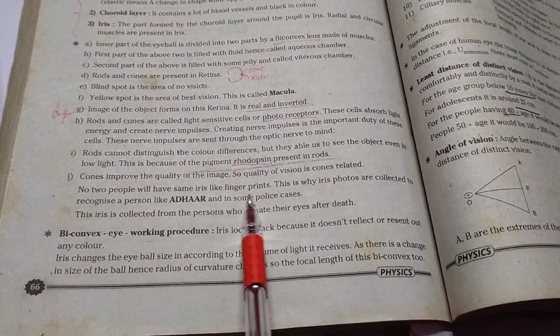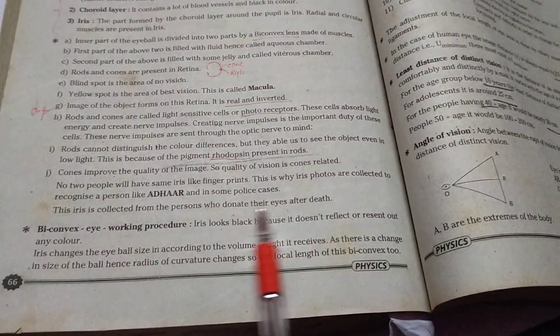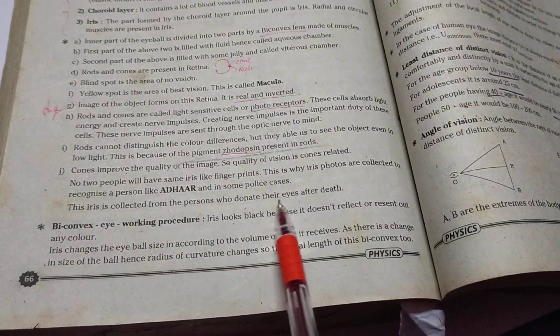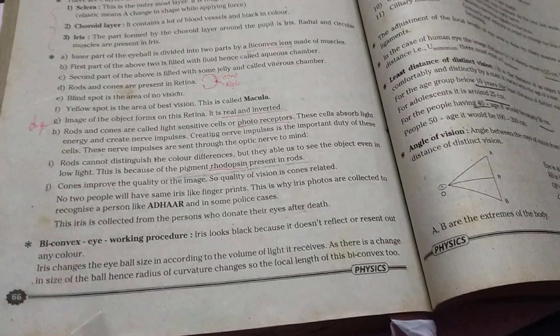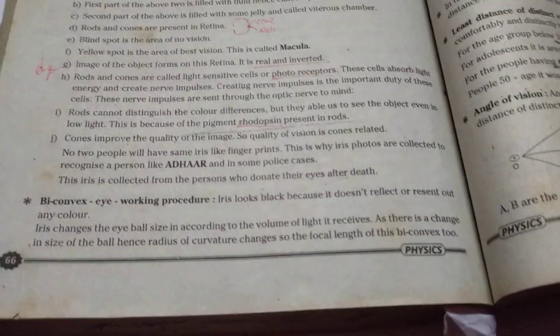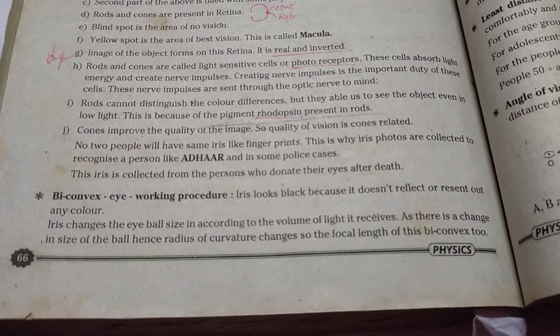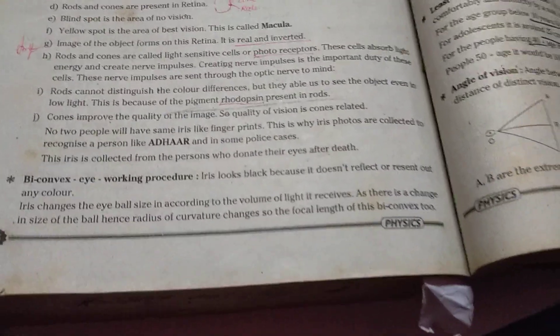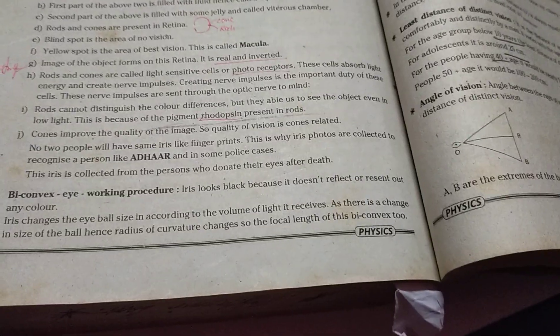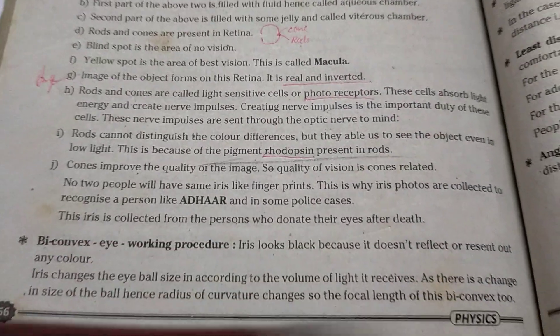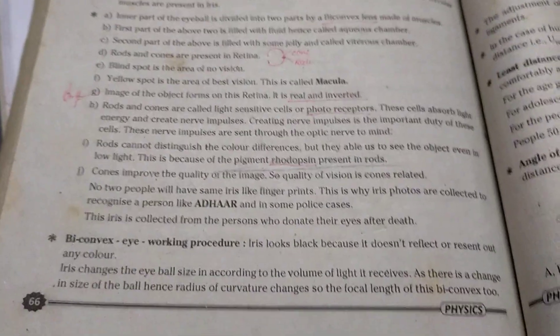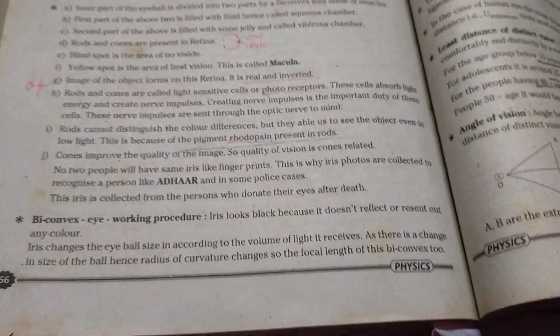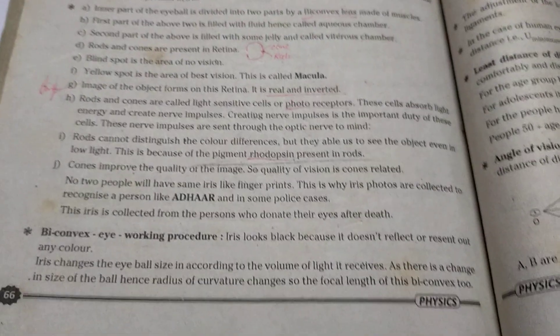No two people will have same iris like fingerprints. This is why iris photos are collected to recognize a person. And in some police cases these iris is collected from the persons who donate their eyes after death. So you know that every fingerprints are not same in any human being right. So it's like that iris also. Iris is the one dominant character to identify the person.